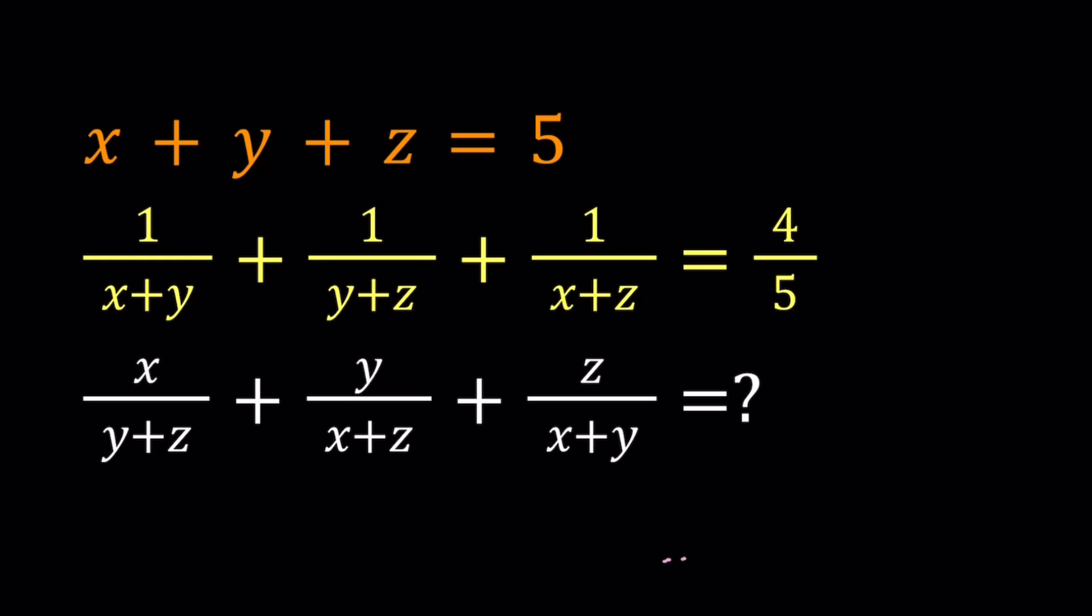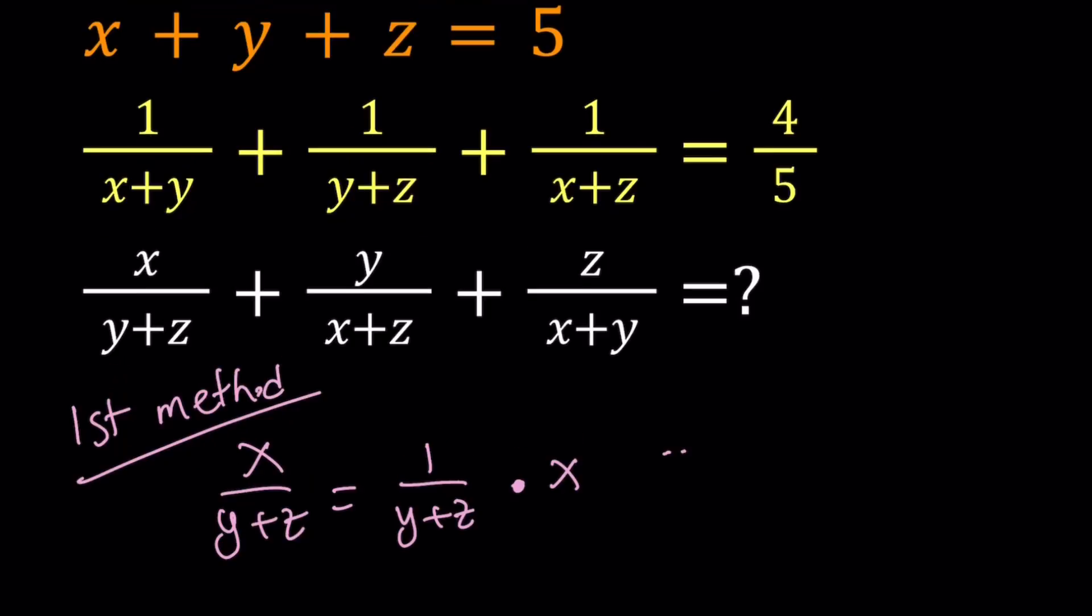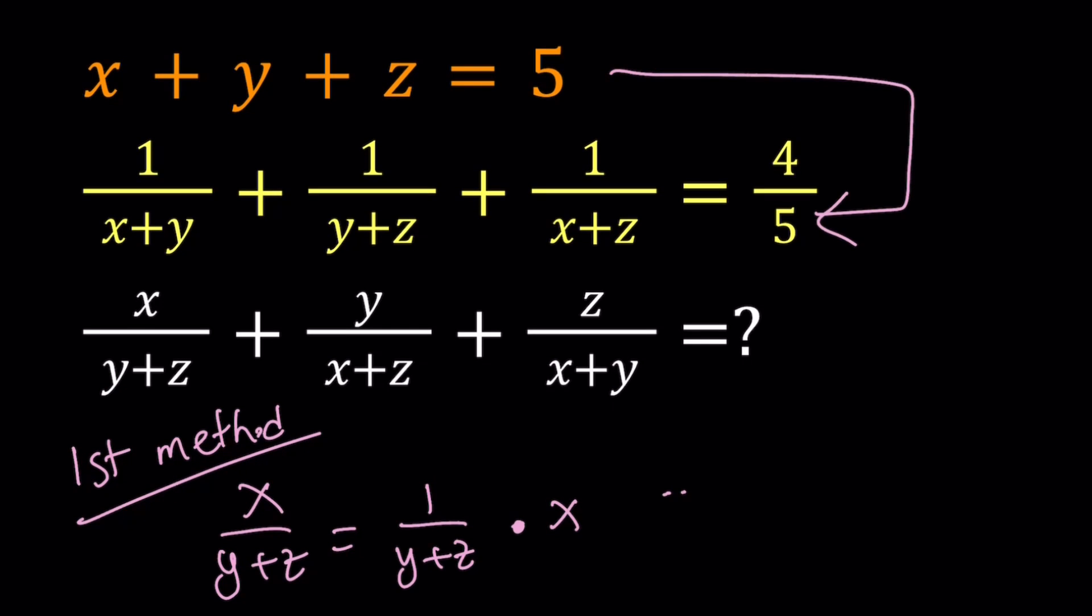I'll be introducing two methods. Let's start with the first one. Now notice that x over y plus z can be written as 1 over y plus z times x. So here's the key ingredient. We're going to take the first expression, the first equation, and multiply by the second equation.